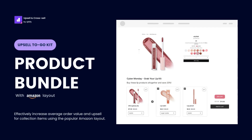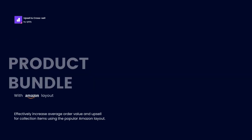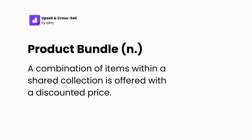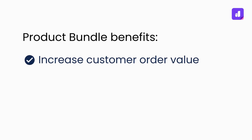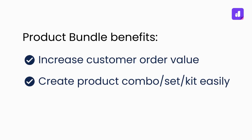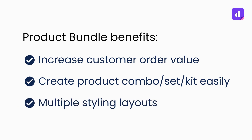This is your upsell to-go kit — easily upsell collection items with Product Bundle. Product Bundle is an upsell method combining products in one set and offering it at a discounted price. This offer type supports increasing customers' average order value, and lets you easily sell combos with multiple styling layouts.